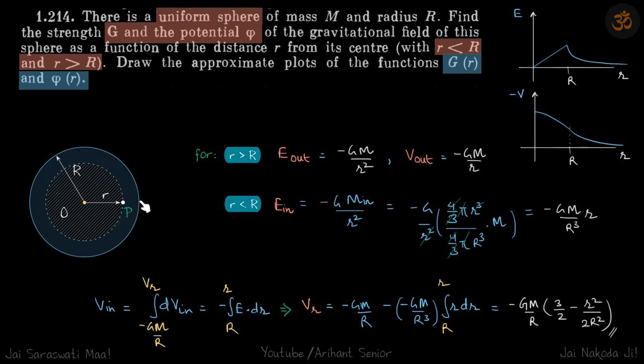So we'll take our limits from the point on the surface to the point P. So dV_in where limits is on the surface, potential at the surface which is minus GM by R to V(r), is equal to minus E dot dr. So again r will vary from the surface, that is capital R, to small r.